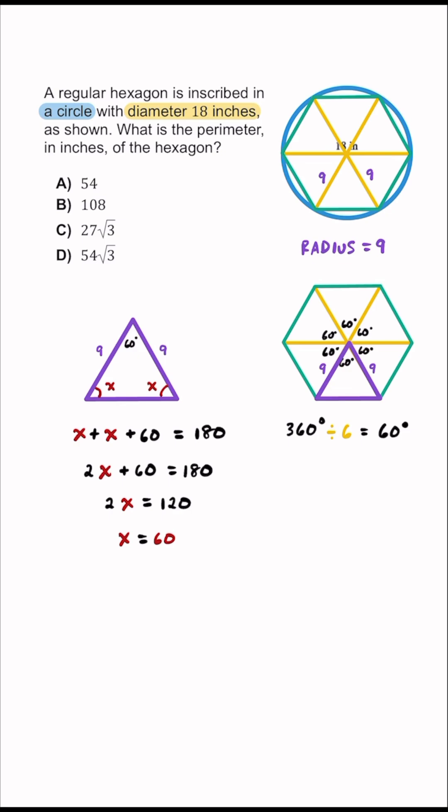Now for the future, this is always going to be true. Inside of regular hexagons, you're always going to have six equilateral triangles, but if we know that all the angles here are going to be 60 degrees on the inside, then we actually know that this last side length is also going to be 9.